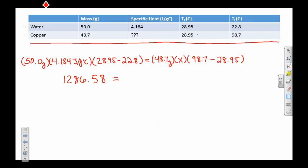Here we're going to have a variable in it, so basically it's 48.7 times whatever this ends up being, and that comes out to 3396.83x. And when we divide both sides by 3396.83, we get 0.379 joules per gram degree Celsius.